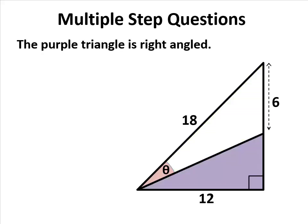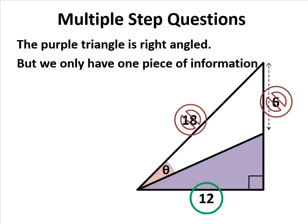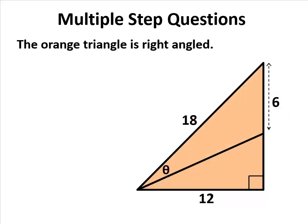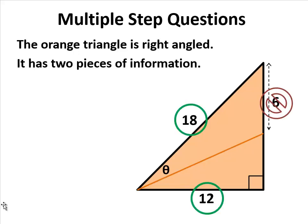The bottom triangle only has one piece of information. We know the base is 12, but we have no other pieces of information about it. So it can't be that. Instead, we have to look at the whole triangle combined, taking out the middle line. And then we see that we have two pieces of information for that: the base of 12, hypotenuse of 18.